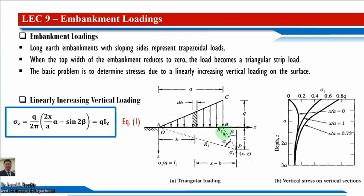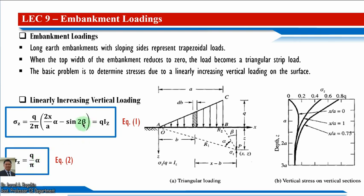If point B lies in the plane BC, then beta equals zero and x equals a. The equation reduces to equation 2: sigma z equals q over π times alpha. So equation 1 reduces to sigma z equals q over π times alpha, and we also have a chart showing vertical stress on vertical sections where the y-axis represents depth z and the x-axis represents the ratio x over a.